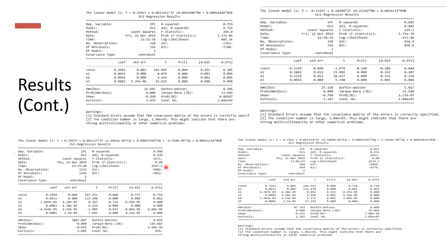From GEM5 results we concluded that varying LQ, SQ, and IQ does not affect IPC much, so for the ChampSim model we varied only IF, ROB, and retire width. We observed similar results with one integer benchmark and one floating point benchmark. IMAGICK is our floating point benchmark and OMNETPP is the integer benchmark. As expected, ROB variation does not affect much since the base machine already had a ROB of 64, meaning a 64-wide ROB is sufficient for the benchmarks used.